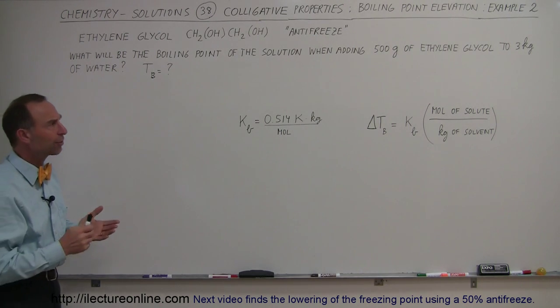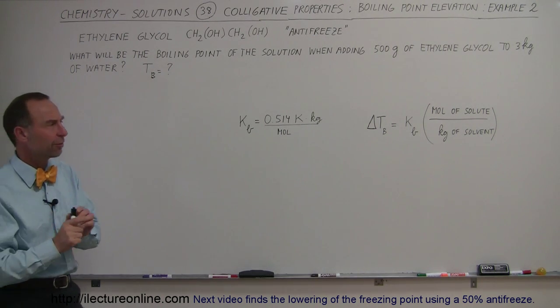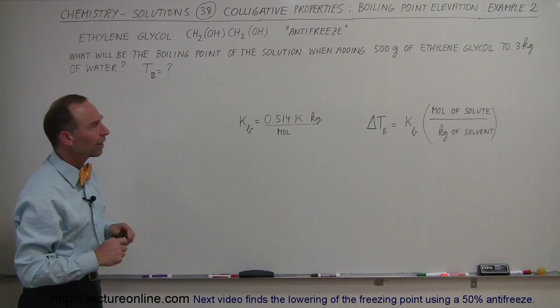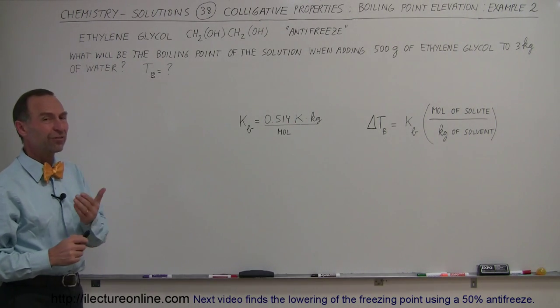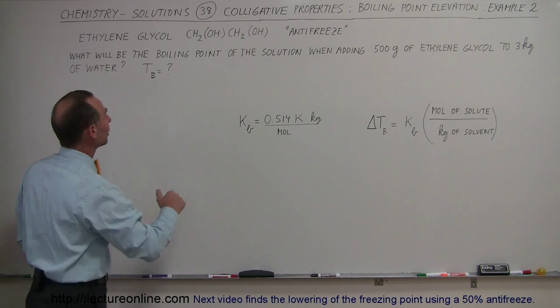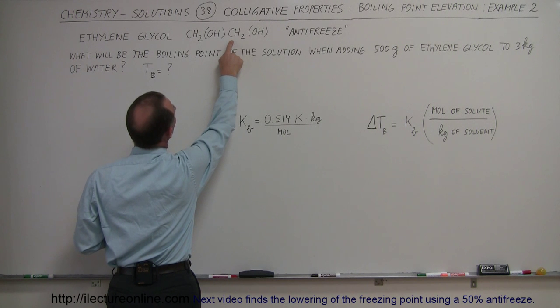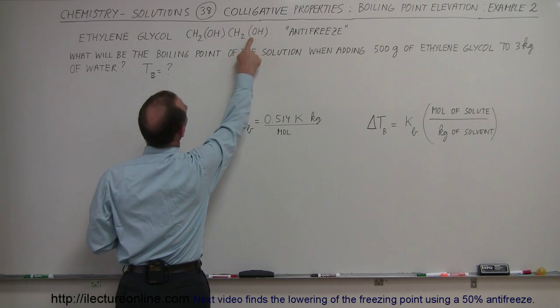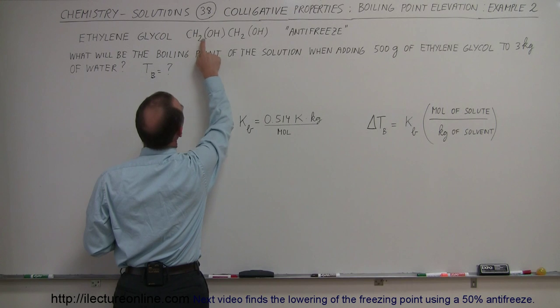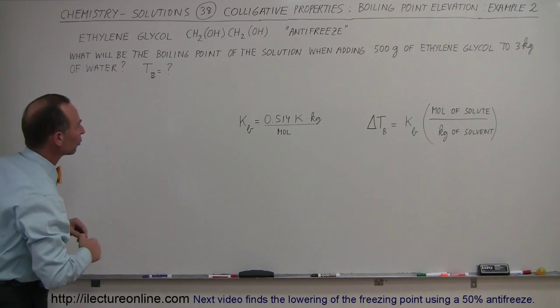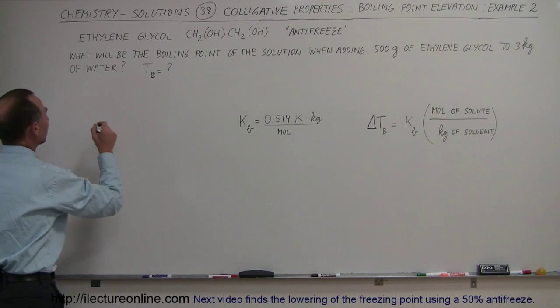So since we're adding 500 grams of ethylene glycol, we need to figure out how many moles of that substance it is. So first let's find the molar mass of that. Here's the chemical equation, so we can see that there's two carbon atoms in the molecule, looks like there's two oxygen atoms in the molecule, and two plus two is four plus two more is six hydrogen atoms in the molecule.